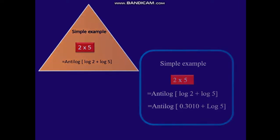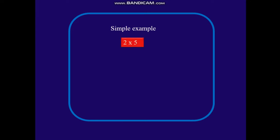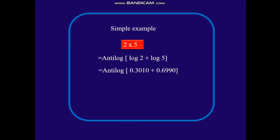Let's find log of 5 from the common logarithmic table. For 5 we will see 50 and 0, which gives 6990. So we get: 2 into 5 is anti-log of 0.3010 plus 0.6990. Anti-log of this will give you 2 into 5. You add up and you get anti-log of 1.0000.